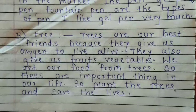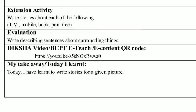The last one is apple tree: 'Trees are our best friends because they give us oxygen to live. They also give us fruits and vegetables. We get our food from trees. Trees are an important thing in our life. So plant the trees and save the lives.'